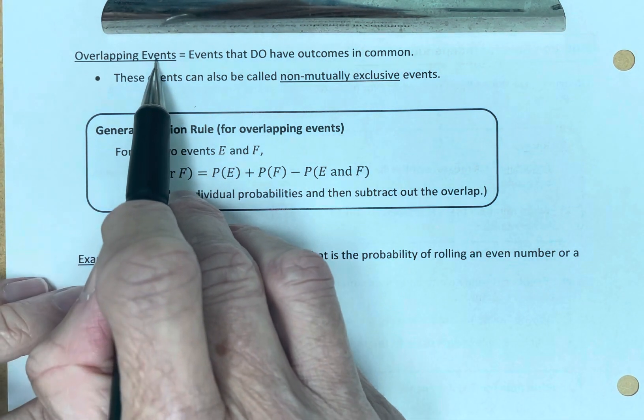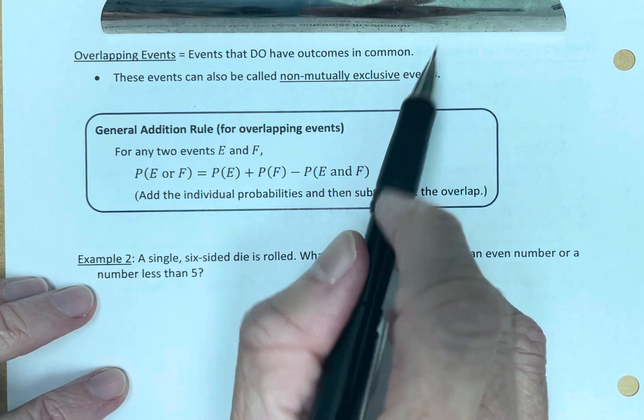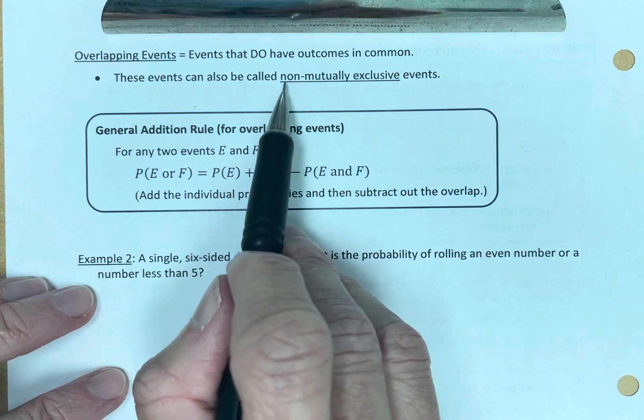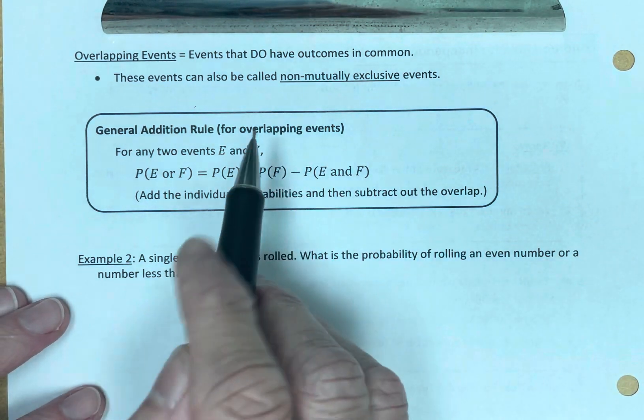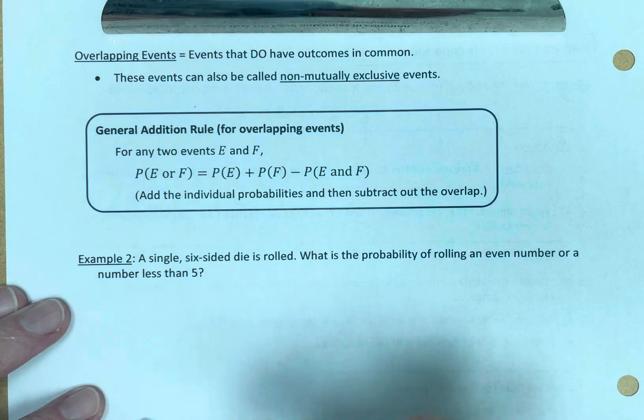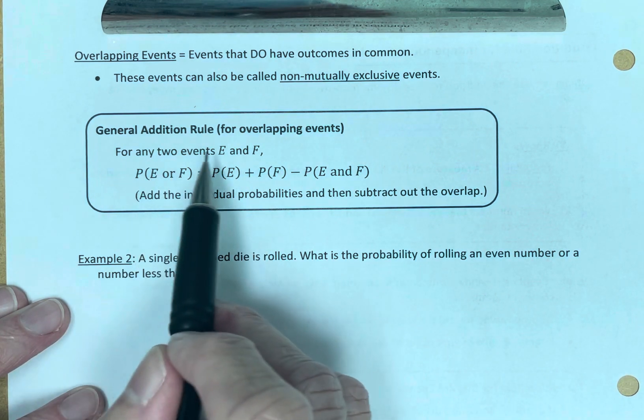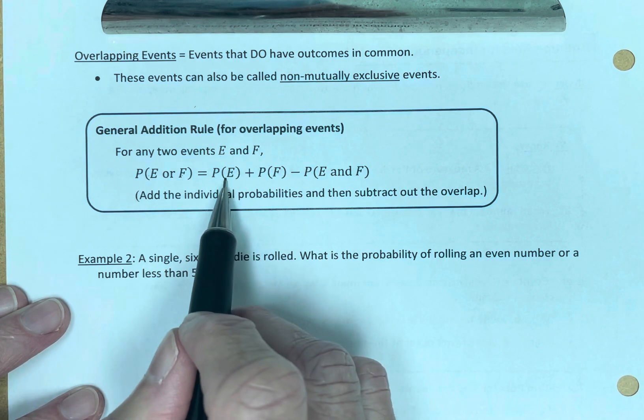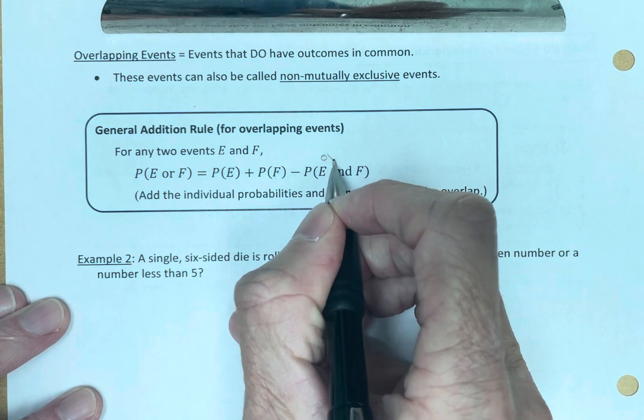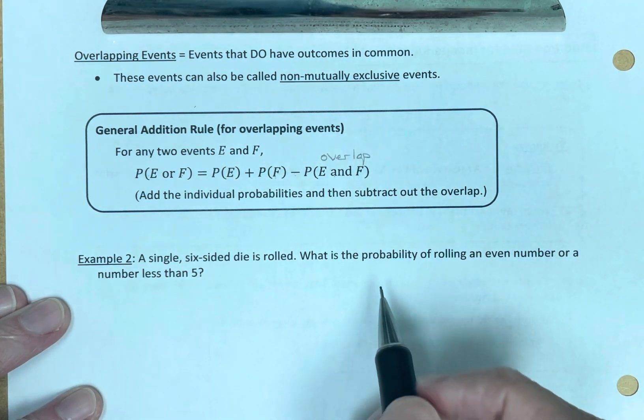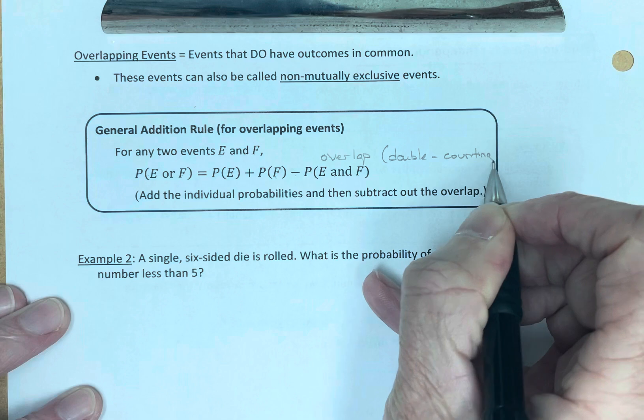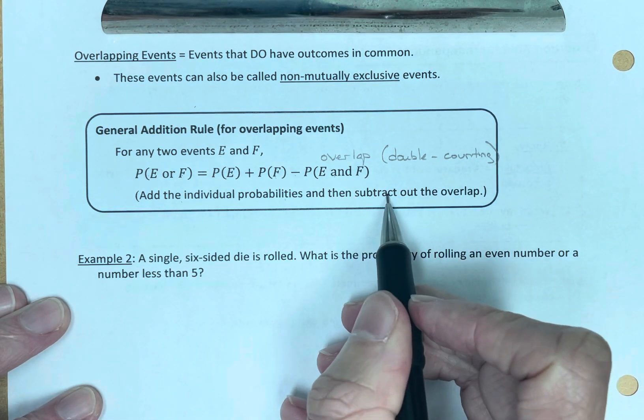So what happens if the events are overlapping? Events that do have outcomes in common. These events can also be called non-mutually exclusive events. The other ones are mutually exclusive. These are not mutually exclusive. So if they're overlapping, we need to remove the overlap. We don't want to count people or count items twice. So for any two events E and F, the probability of E or F: find the probability of E, add the probability of F, and then take away the overlap. So this is the overlap. Subtract what you counted twice. Subtract your double counting. Add the individual probabilities and then subtract out the overlap.